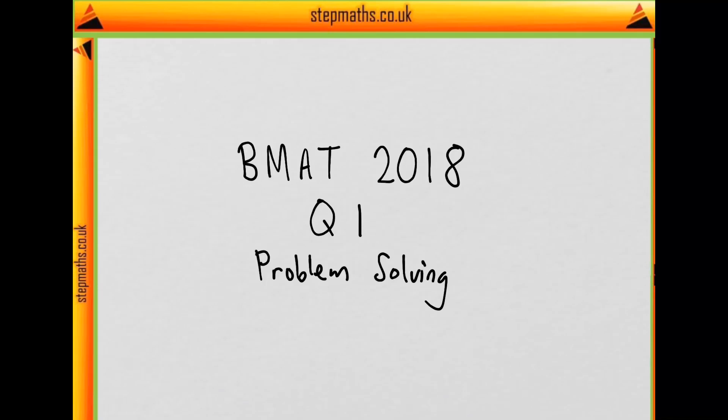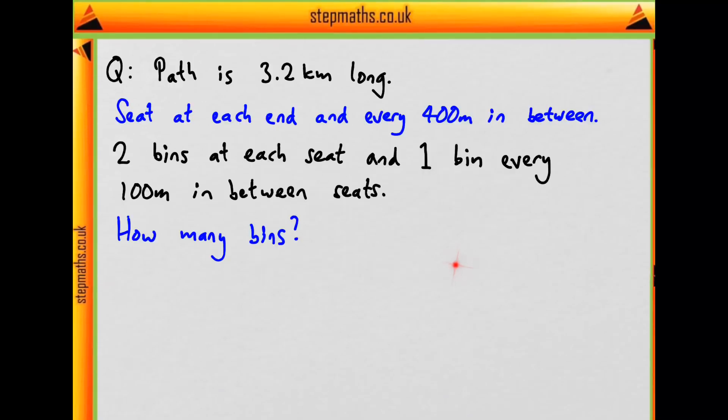This is question one on problem solving from the 2018 BMAT. We're told that a path is 3.2km long, and there is a seat at each end of the path and every 400m in between, and there are two bins at each seat and one bin every 100m in between seats. So therefore, how many bins are there on the path?